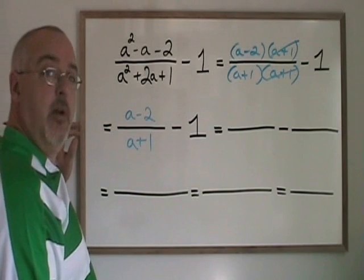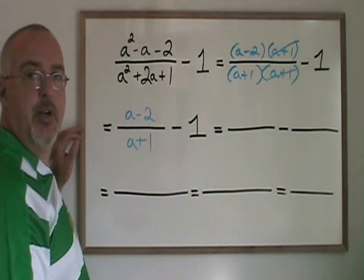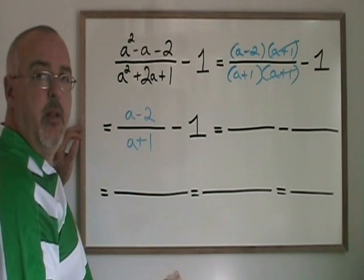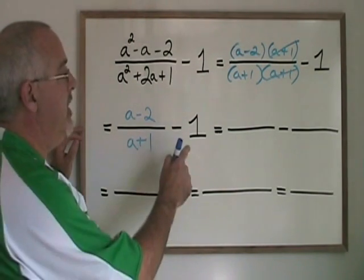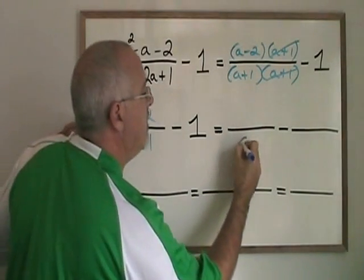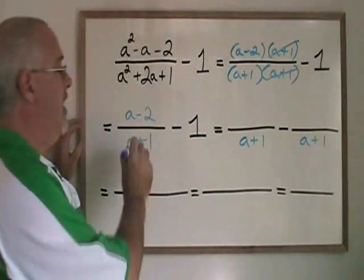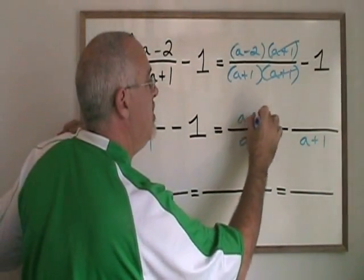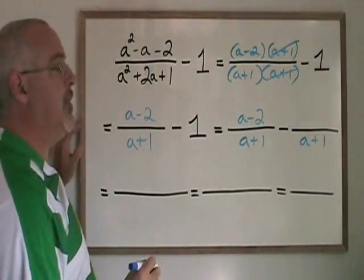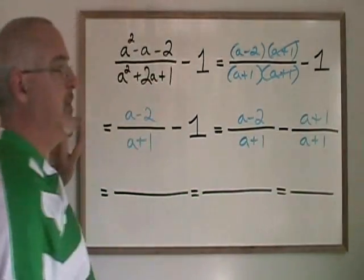Now it's time to form our common denominator. 1 can be seen as a fraction 1 over 1. The lowest common denominator of 1 and a plus 1 is a plus 1. So we want both fractions to be over the common denominator, a plus 1. The first fraction does not change. The second fraction expands to a plus 1 over a plus 1.